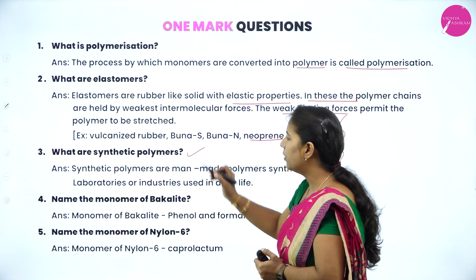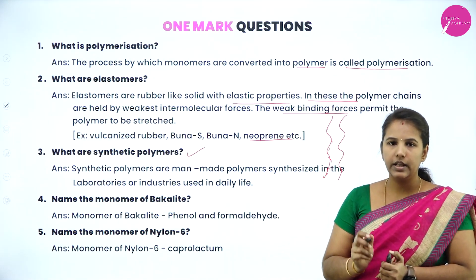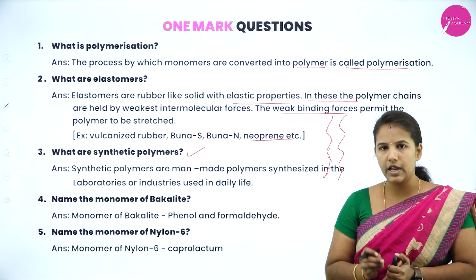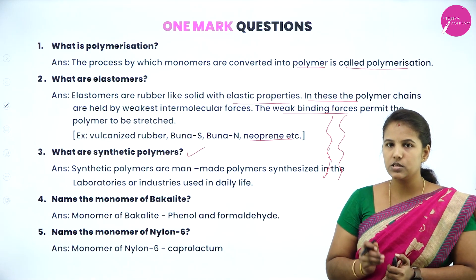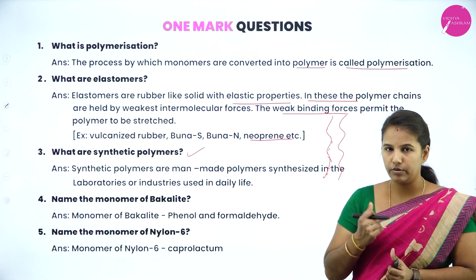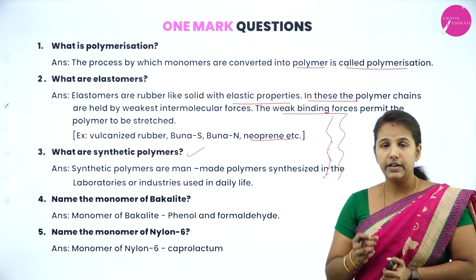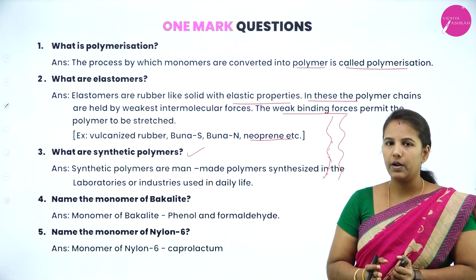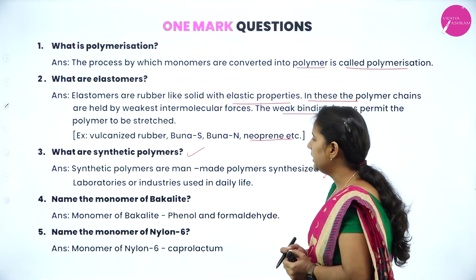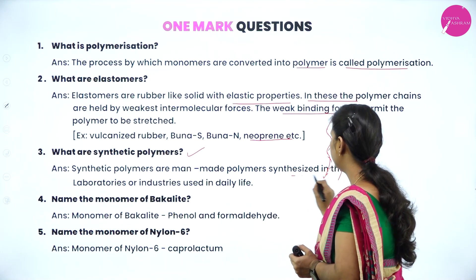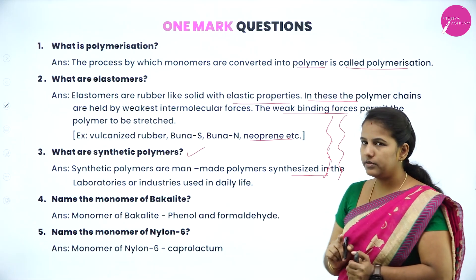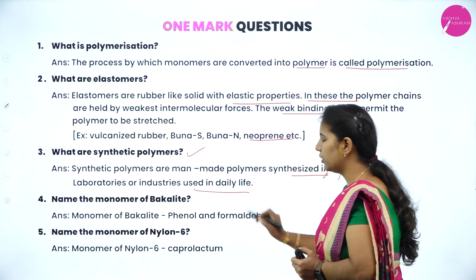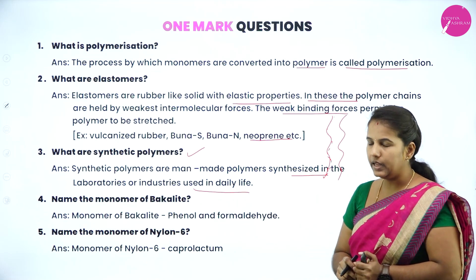What are synthetic polymers? There are two types of polymers: natural polymers and synthetic polymers. Natural polymers are those obtained directly from plant and animal sources, whereas synthetic polymers are man-made polymers prepared in a laboratory or industry and used in our daily life.